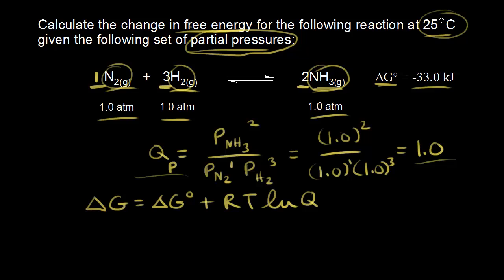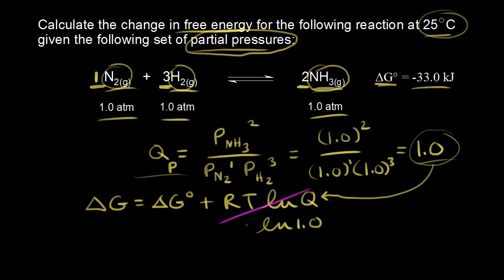To find delta G, we plug Q into our equation. The natural log of one equals zero, so the RT times ln(Q) term drops out, and we find that delta G equals delta G zero, which at this temperature is equal to negative 33.0 kilojoules. So the change in free energy delta G is equal to negative 33.0 kilojoules.